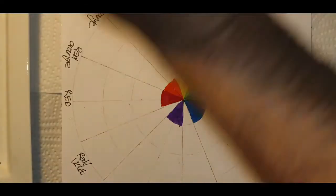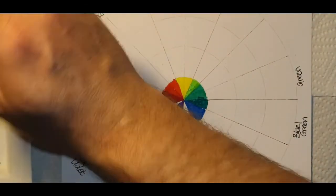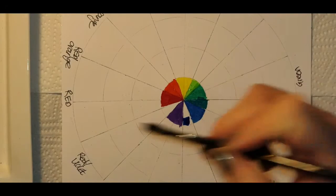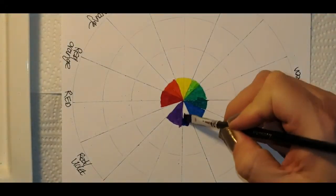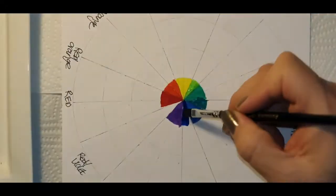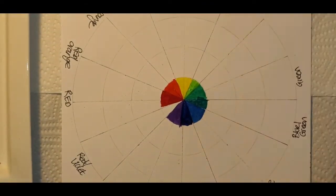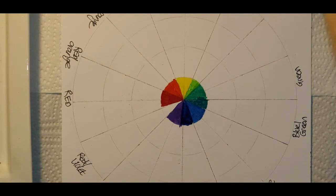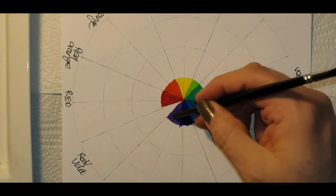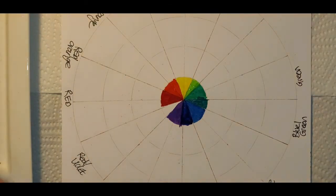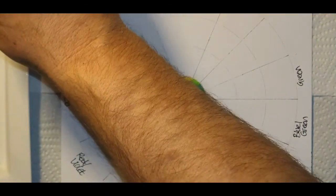If you add blue to violet you get a blue-violet. That's usually the darkest color on the color spectrum. If you add red to violet you get a red-violet.